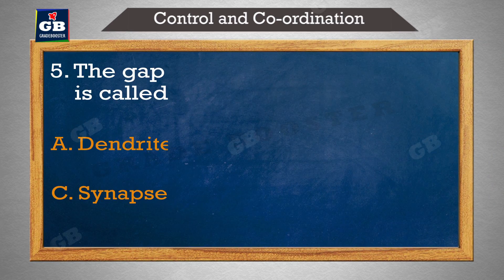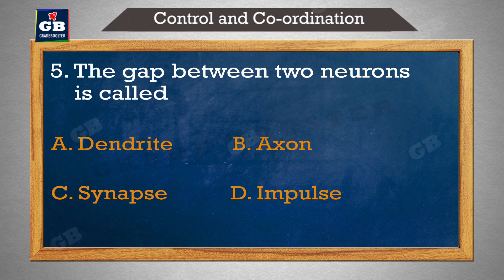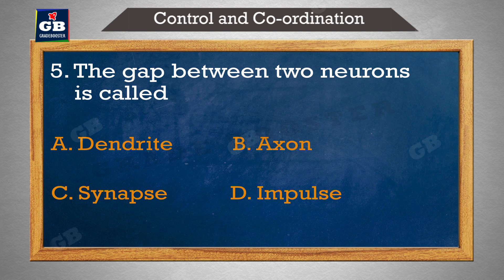The gap between two neurons is called — do neurons ke beech ka antar kya kaha jata hai: a) dendrite, b) axon, c) synapse, d) impulse.